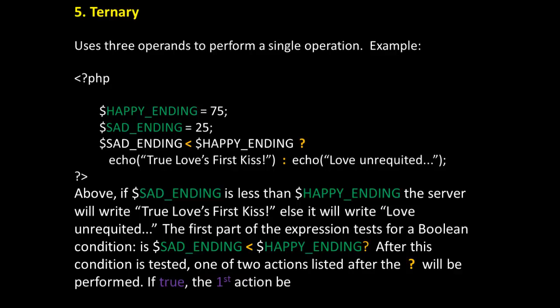The last type of operator that we will examine is ternary. These use three operands to perform a single operation. Look at the following bit of code. We have two variables, happy ending with the value of 75 and sad ending with the value of 25. Now we're going to incorporate these variables into a ternary expression. So we're going to say if sad ending is less than happy ending, which is true, then the question mark echo true love's first kiss. If it's false, on the other hand, on the other side of the colon, echo love unrequited.